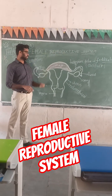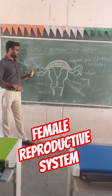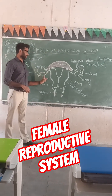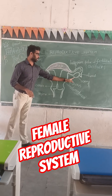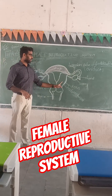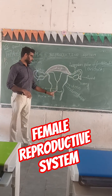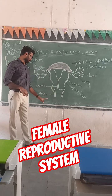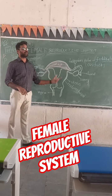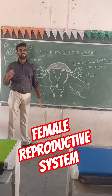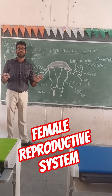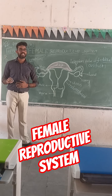In the female reproductive system, we can see one pair of ovaries, one pair of fallopian tubes leading into one uterus, cervix, and vagina. Two ovaries are present — one on the left side and one on the right side. They are present in the abdominal cavity.